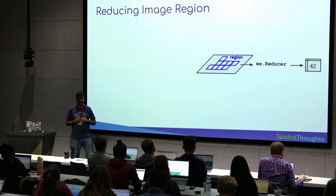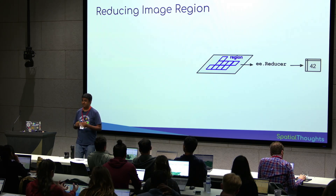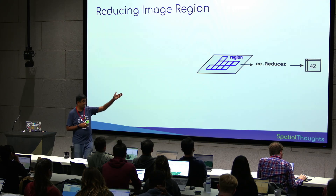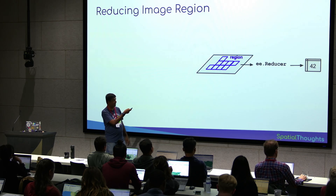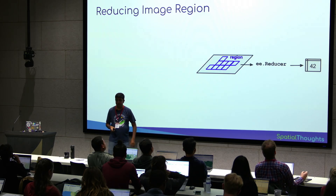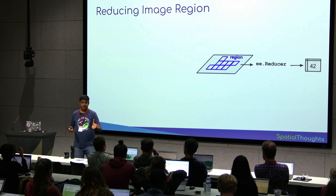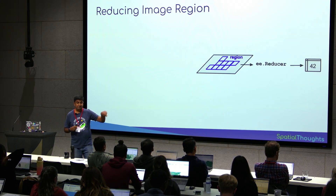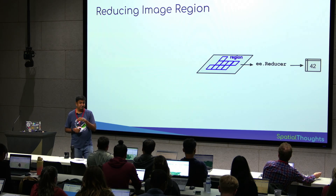Forget about image collections. I have one image, and I want to compute some statistics of an image. For example, I have an image, I have some pixels, I have a polygon, and I want to compute the average value of pixels within the polygon — like zonal statistics. I have a farm, and I want to know the average NDVI within the farm. How do we do this?